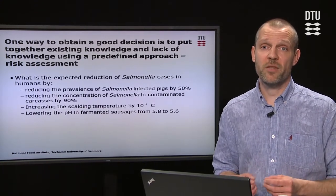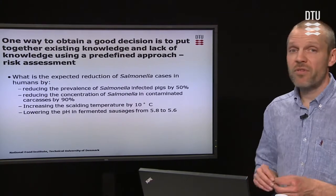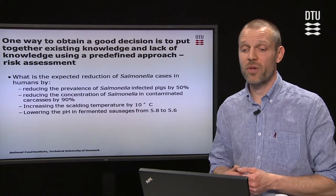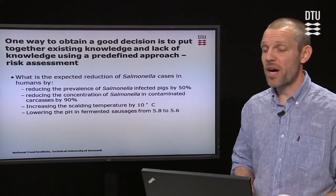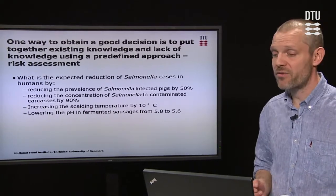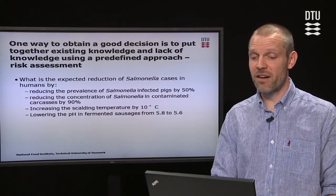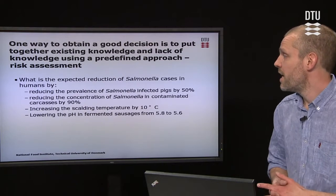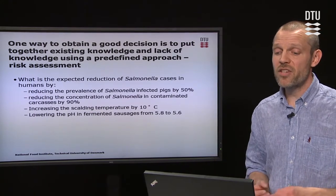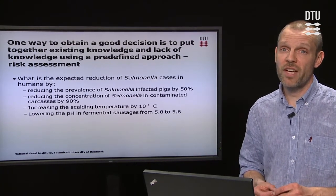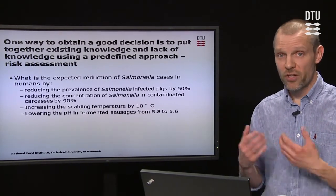You should look at risk assessment as a tool to support decisions. Examples of questions you can answer with a risk assessment include: what is the expected reduction of Salmonella cases in humans by reducing the prevalence of Salmonella infection in pigs by 50%, reducing the concentration of Salmonella in contaminated carcasses by 90%, increasing the scalding temperature at the slaughterhouse by 10 degrees Celsius, or lowering the pH in the fermented sausage from 5.8 to 5.6. These are questions that risk managers typically ask risk assessors to answer.